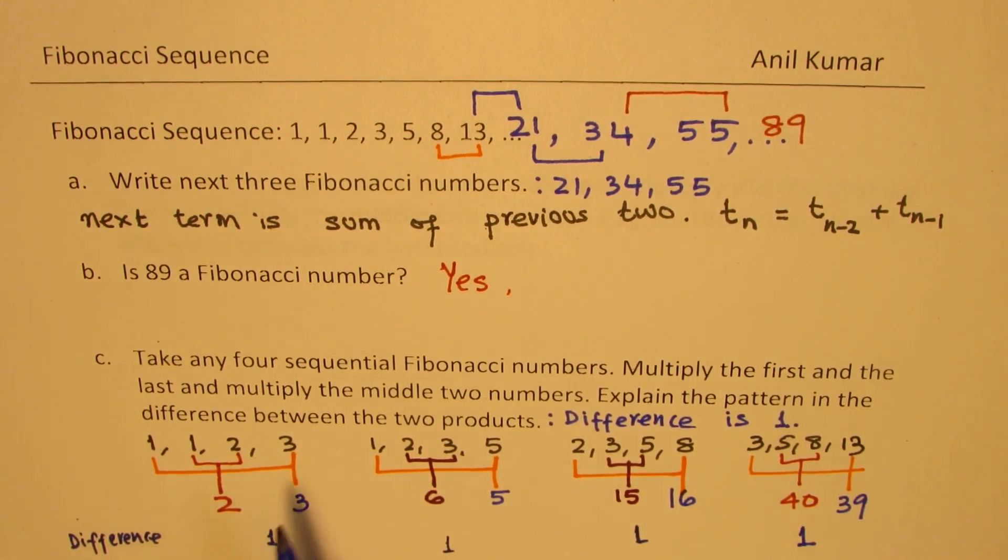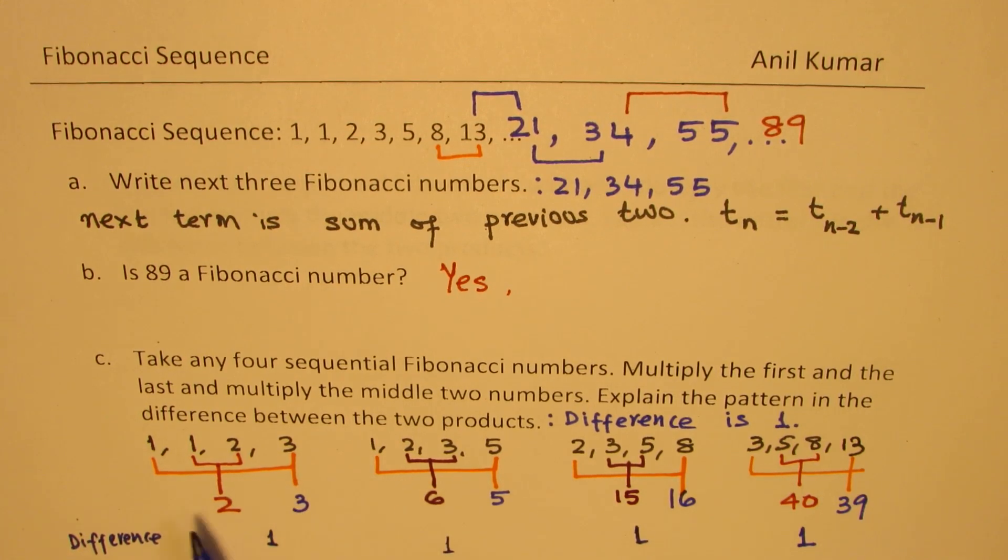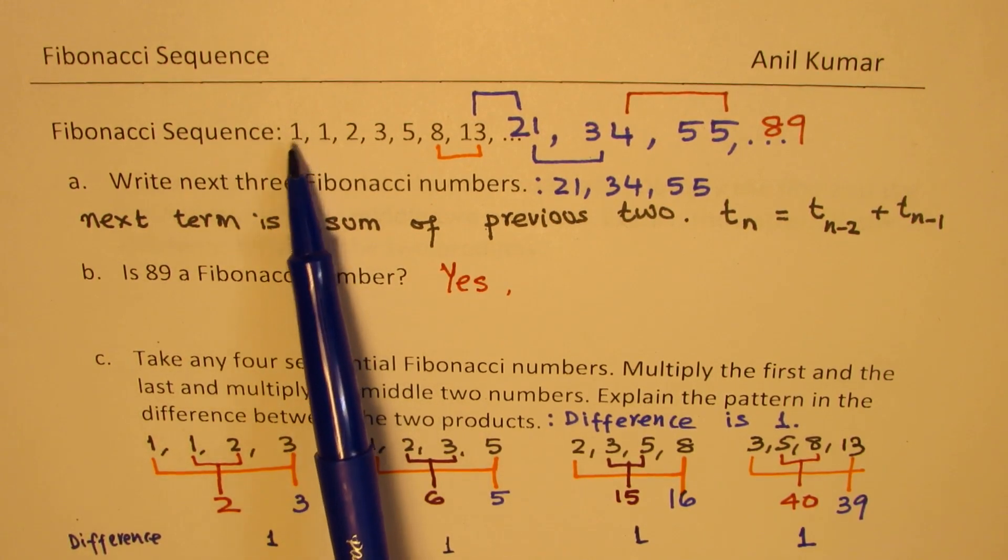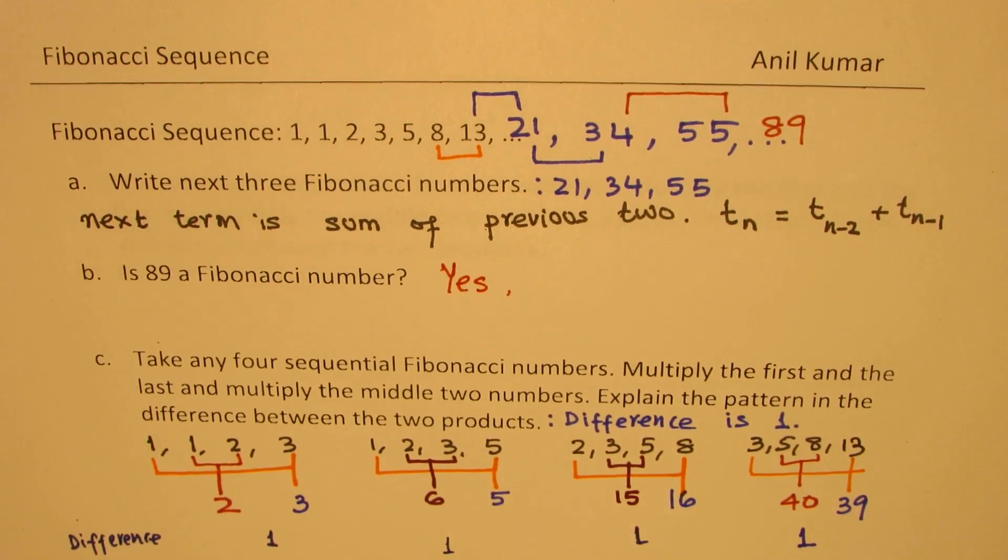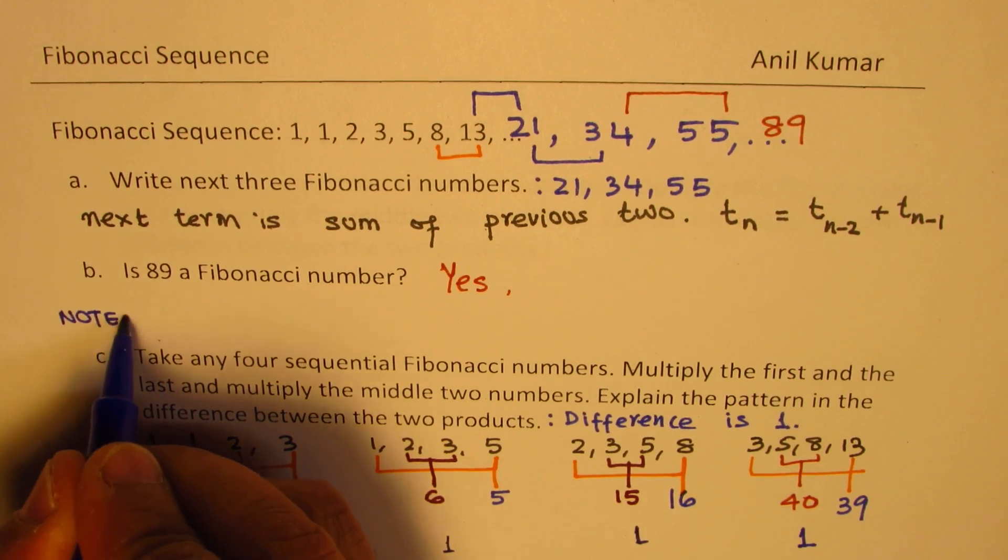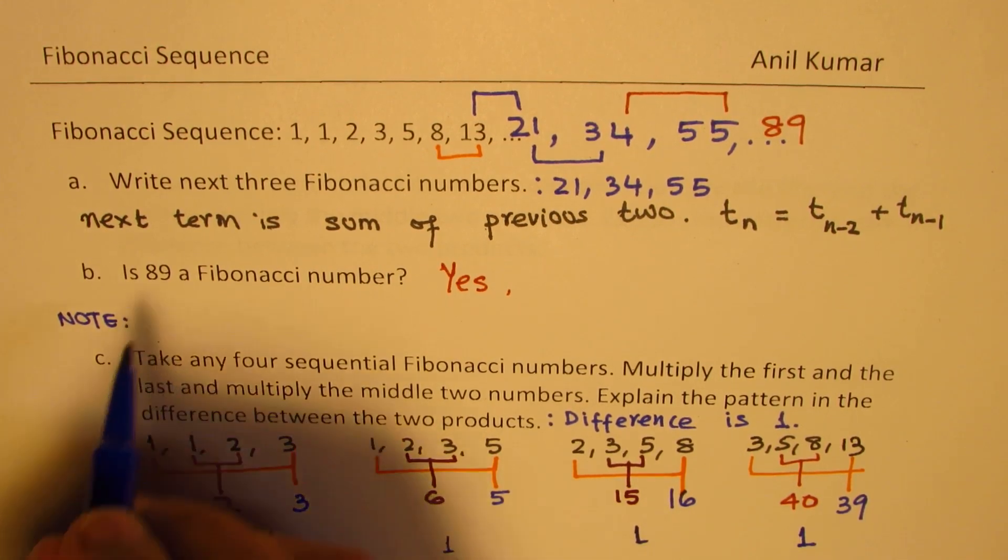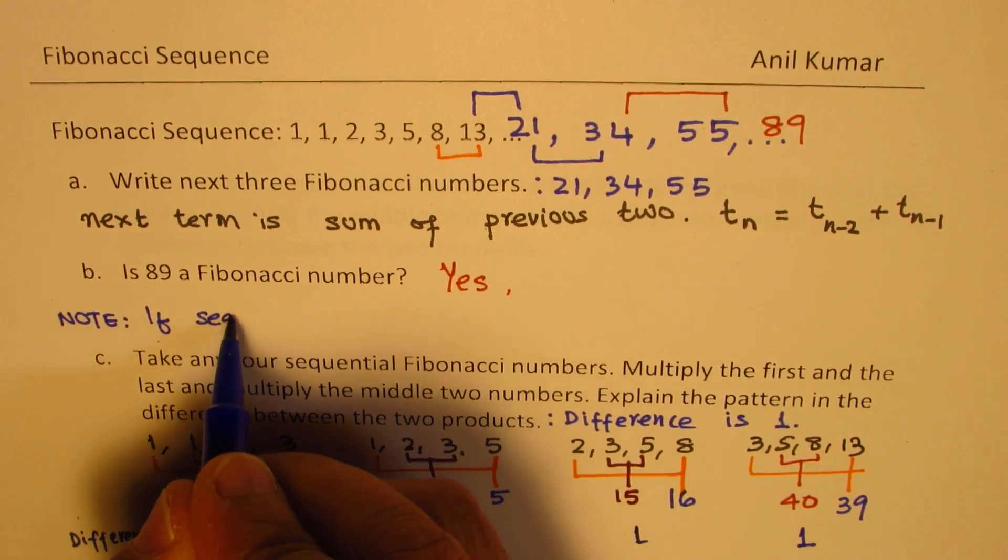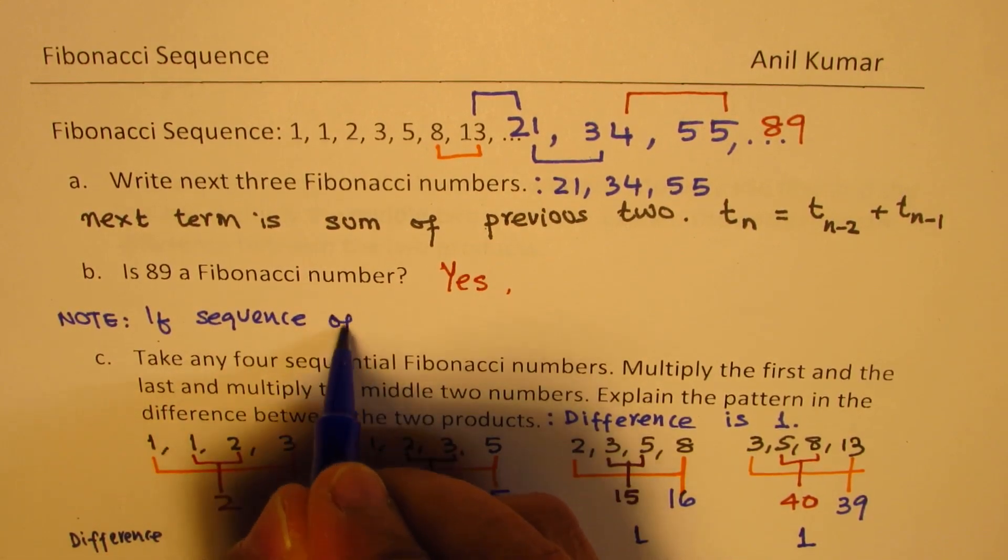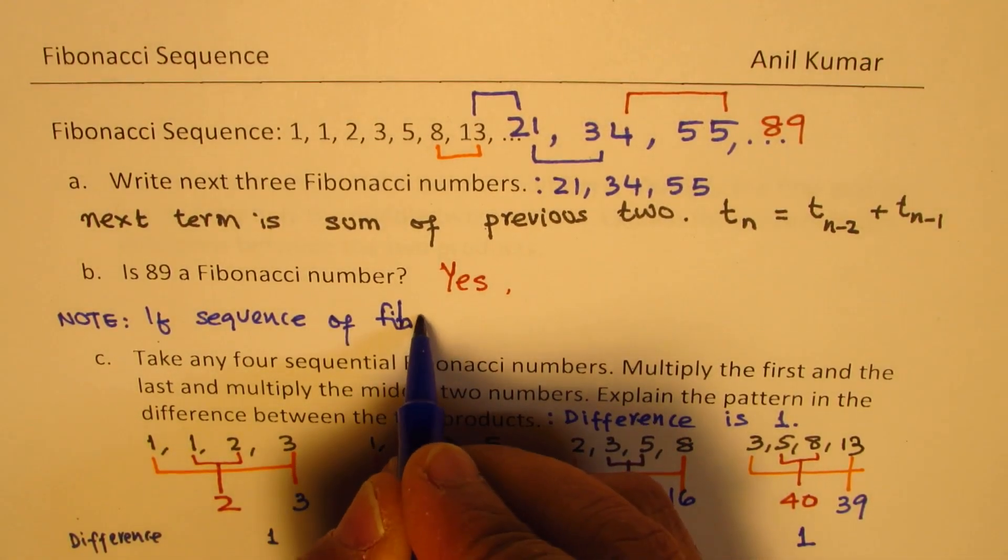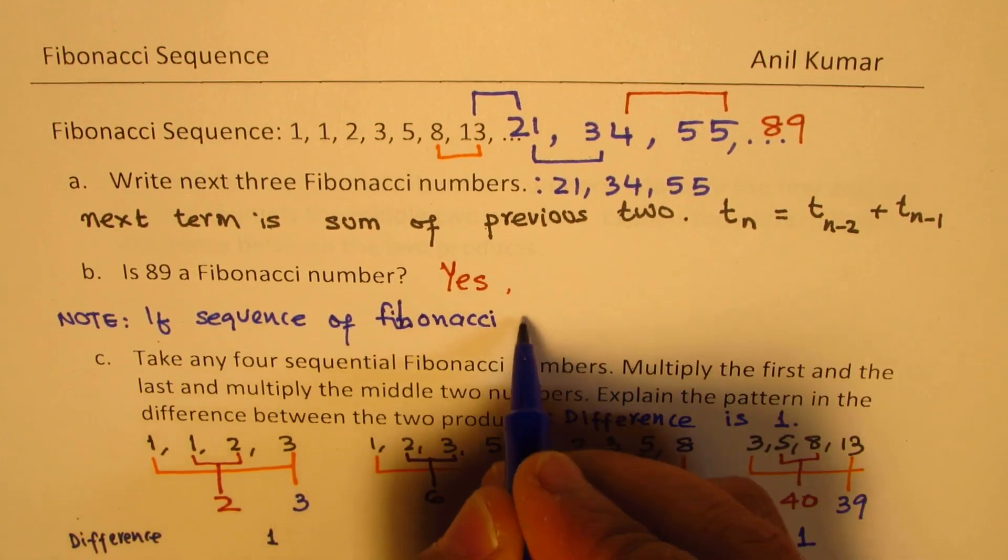The difference is 1 between the two. It could be positive or negative 1. You also observe that alternately, the outer number product is greater than the inner number product. If the starting number is the first one or the odd multiples, we'll write a note here: if a sequence of the Fibonacci series,